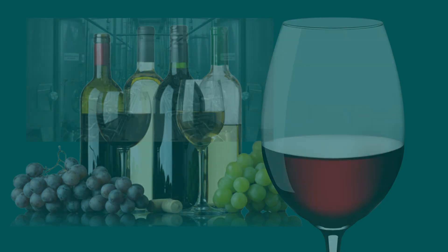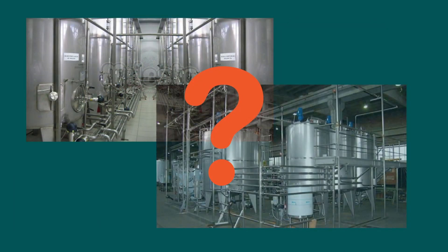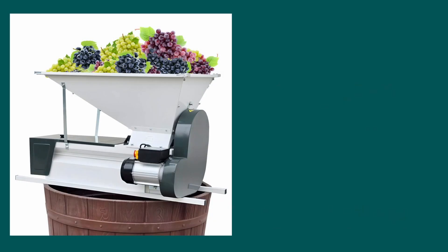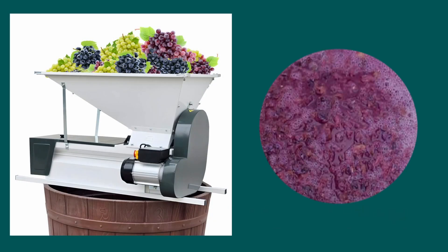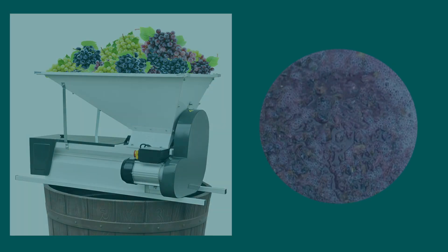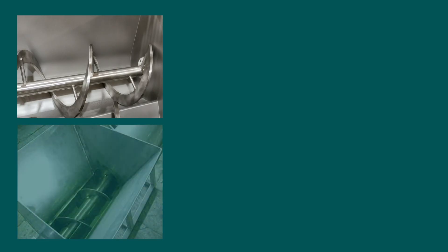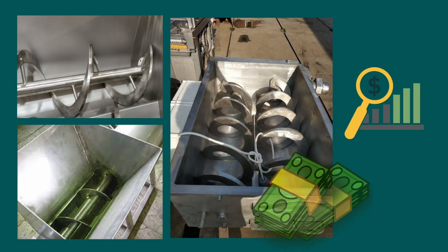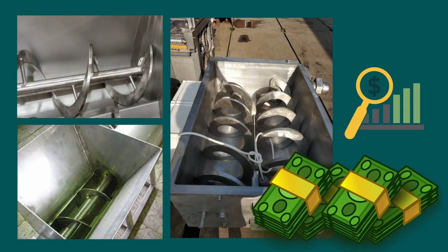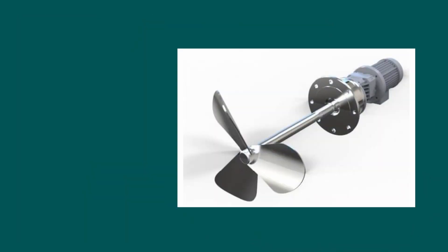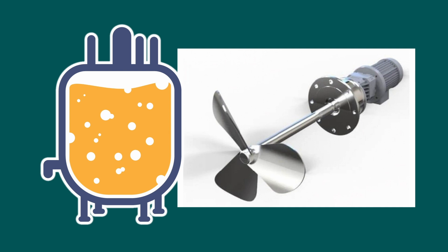Modern wine blending equipment does not always ensure a high quality blend. In most cases this is due to the fact that not all types of mixers are able to ensure the required homogeneity of mixture without suspended solids. For example, screw mixers work well with thick liquids but require considerable effort to integrate into a production system, and side entry mixers are only efficient for low viscosity liquids and do not always ensure complete mixing in large tanks.